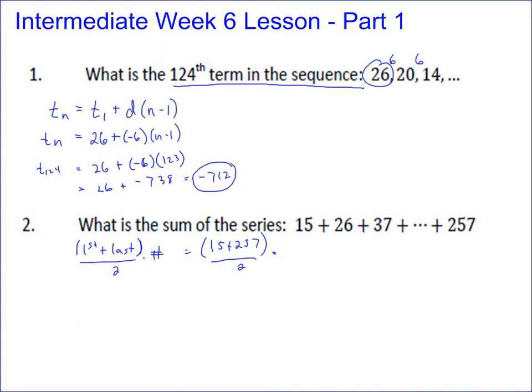Well, there's a couple ways to do it, but the easiest is the first minus the last divided by the difference plus 1. Well, that gives you 242, 242 divided by 11 is just 22 plus 1 is 23. So there are 23 terms.